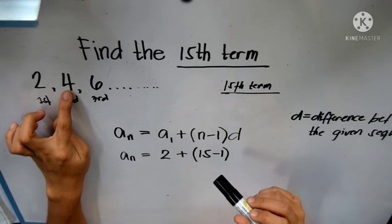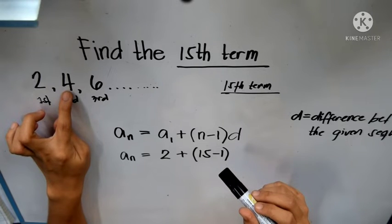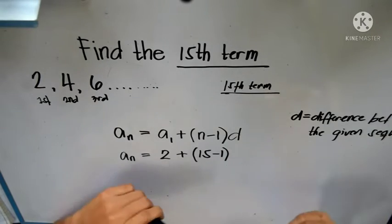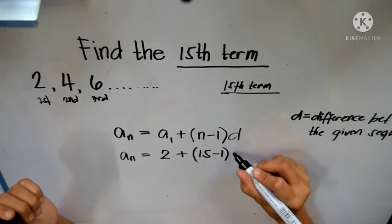Yes, 4 minus 2 is 2, 6 minus 4 is 2. So our d is 2.